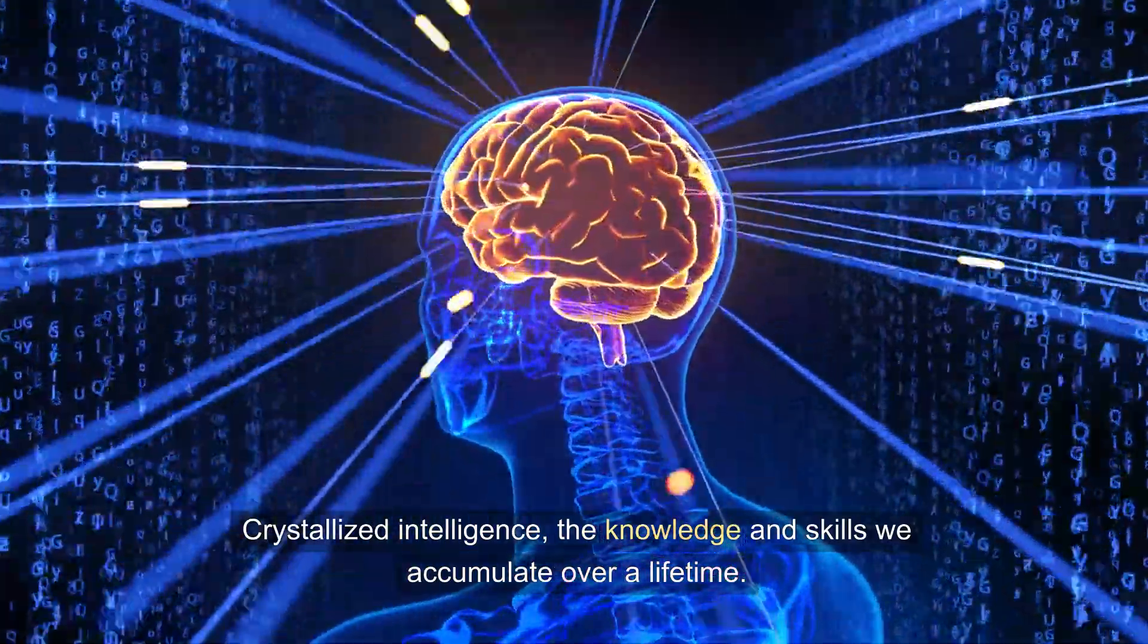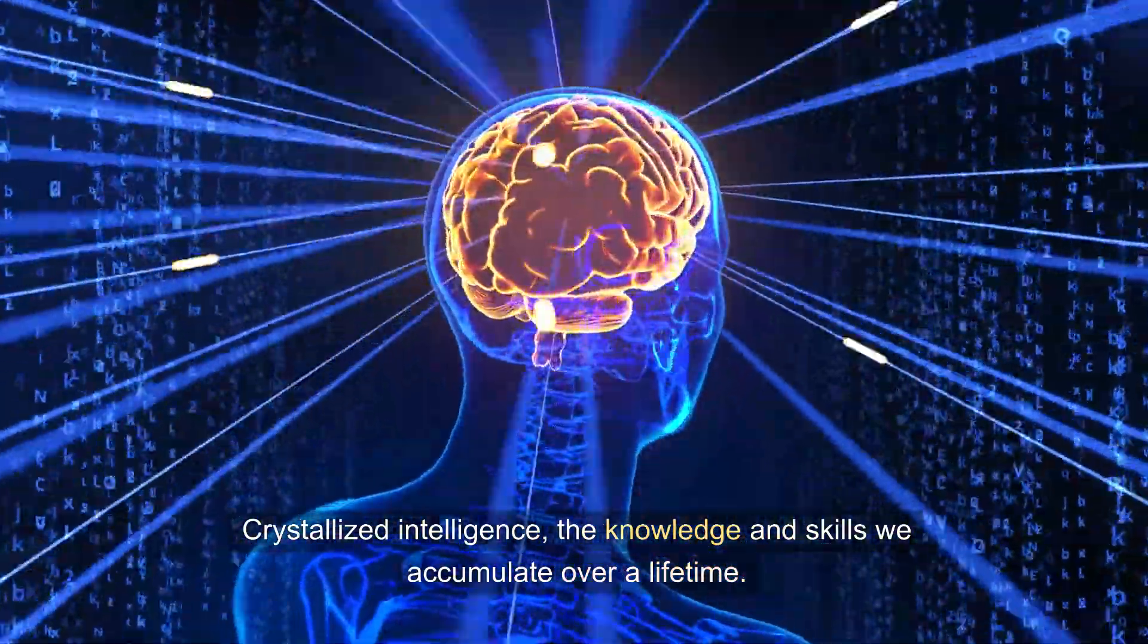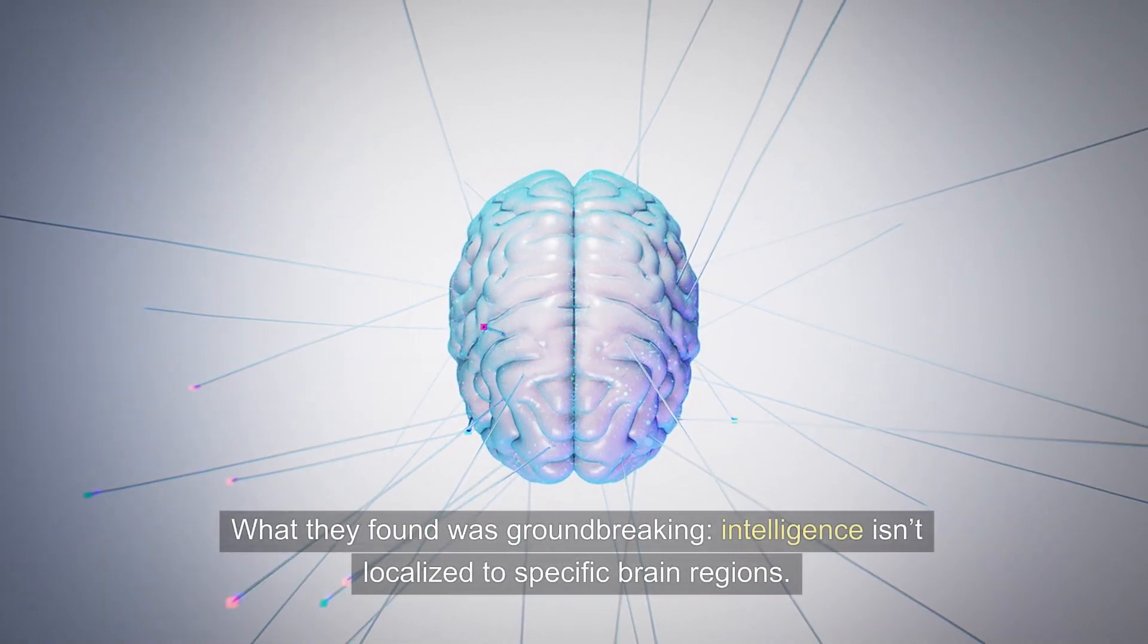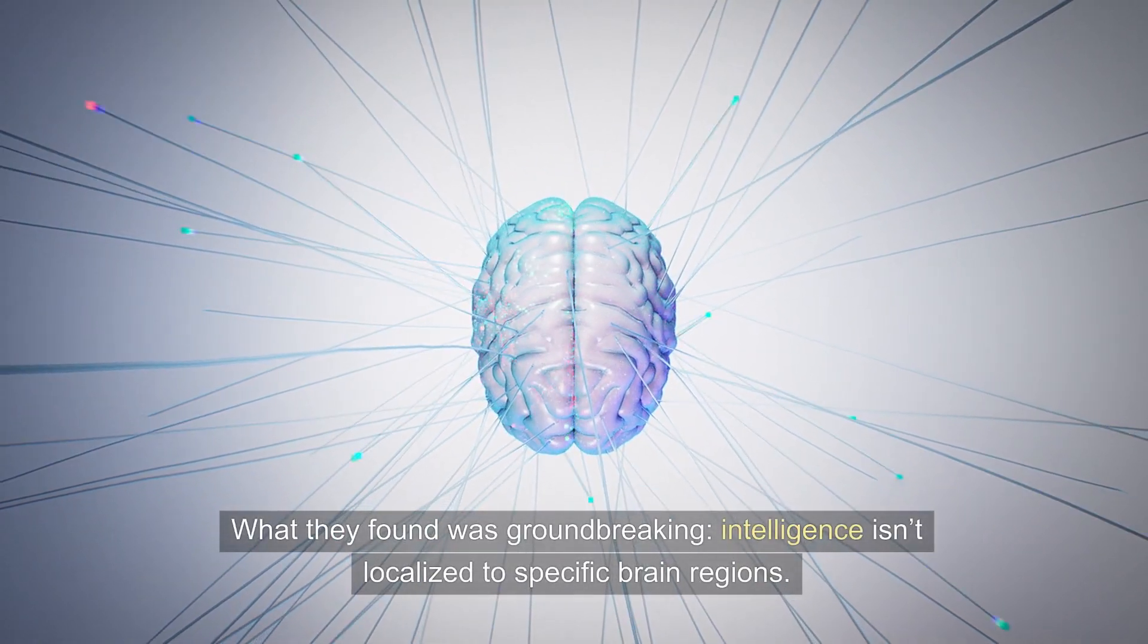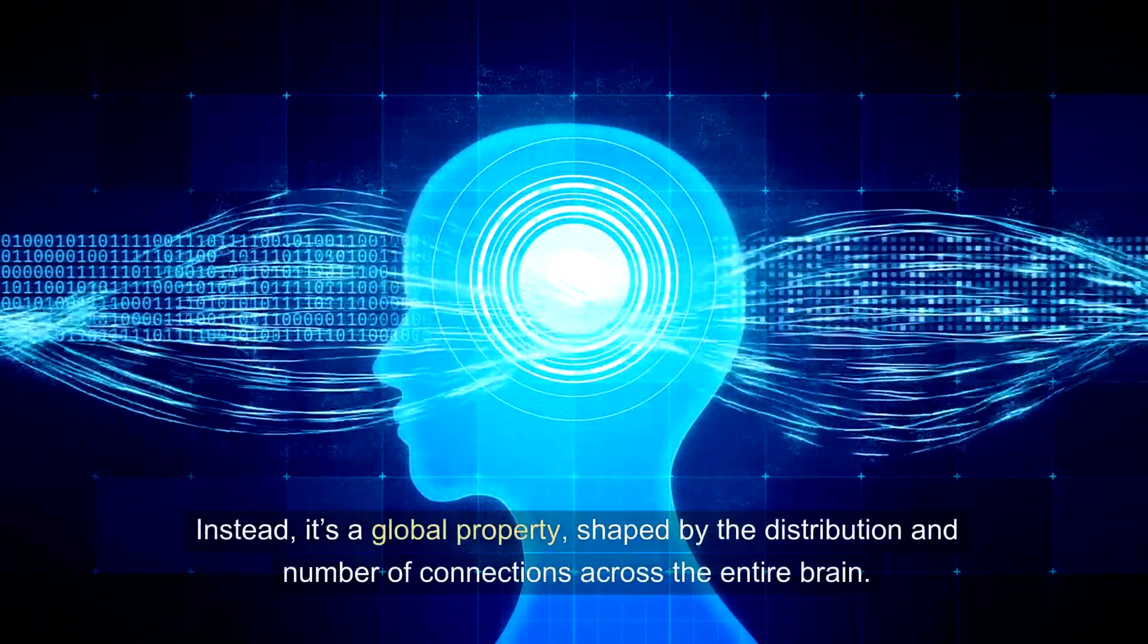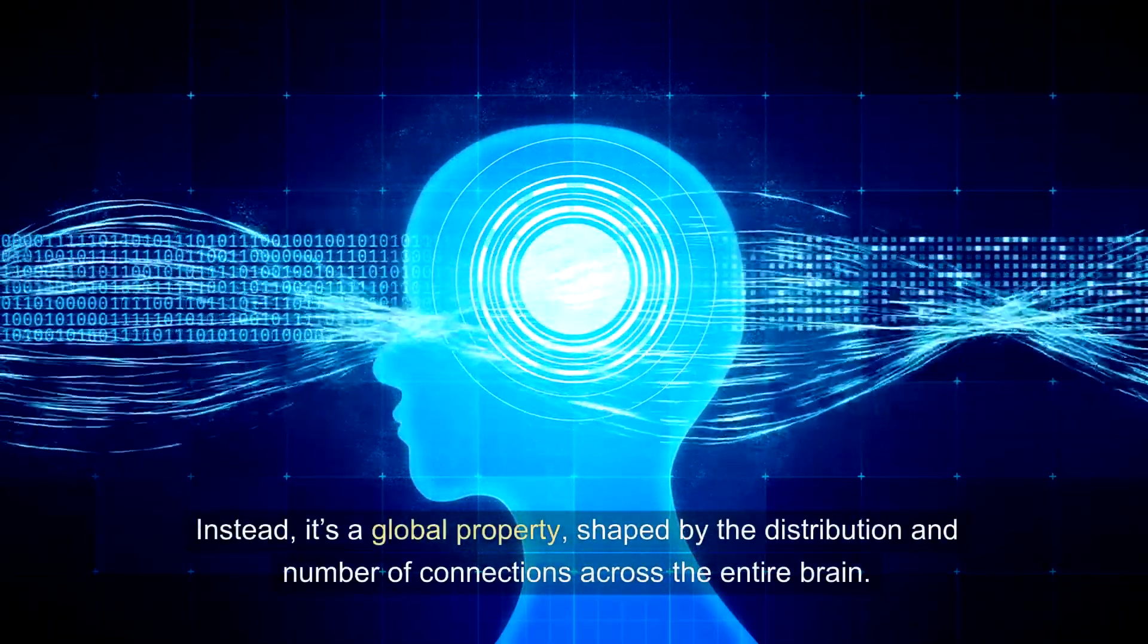the knowledge and skills we accumulate over a lifetime; and general intelligence, which combines both. What they found was groundbreaking: intelligence isn't localized to specific brain regions. Instead, it's a global property shaped by the distribution and number of connections